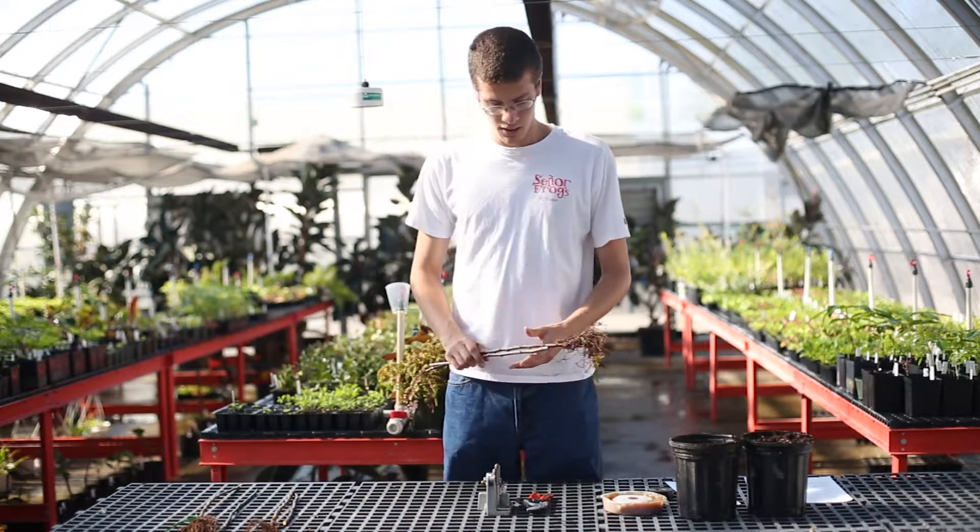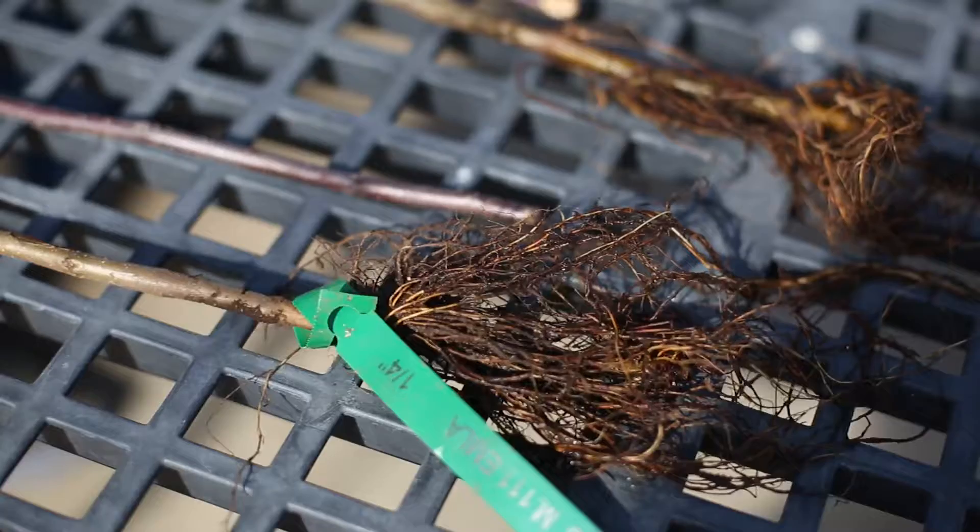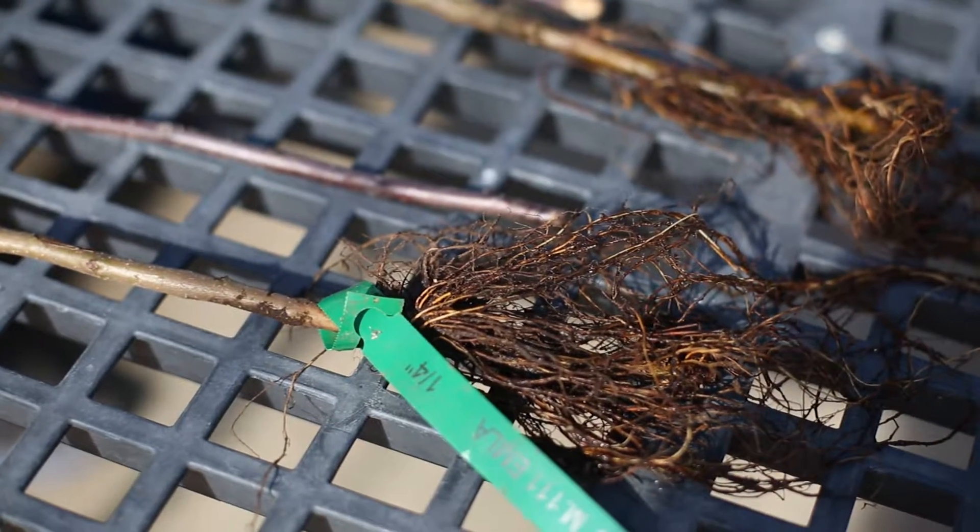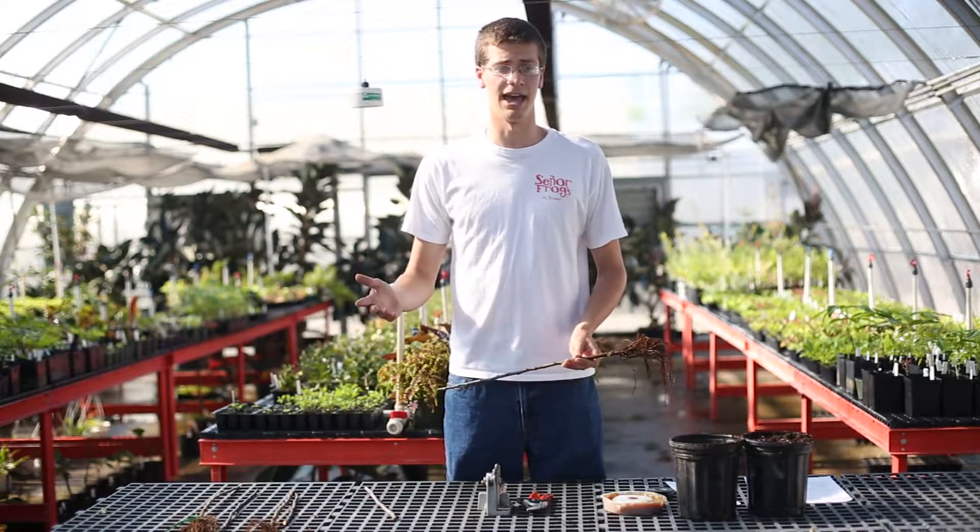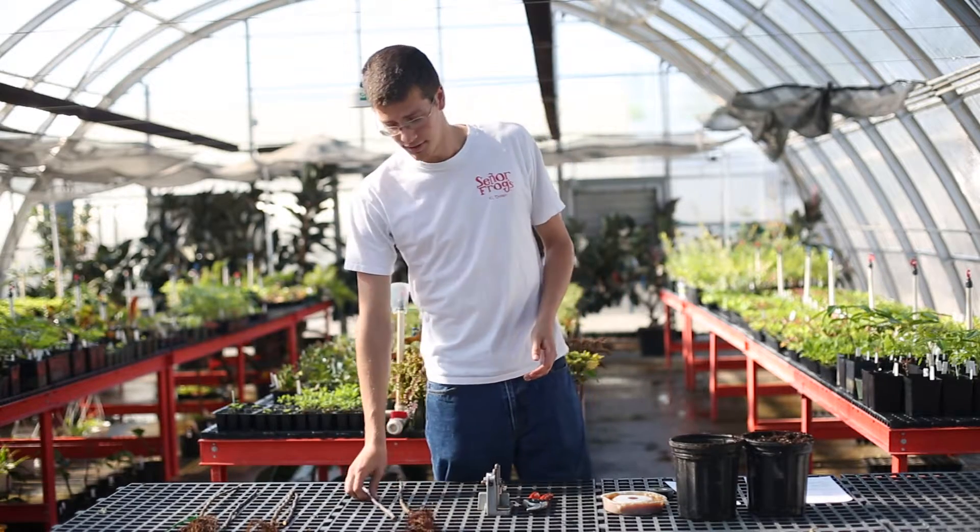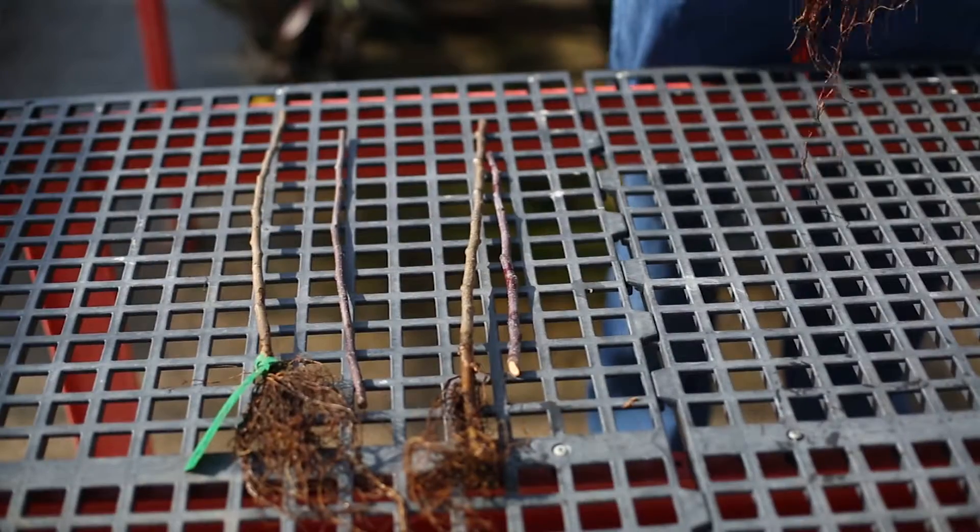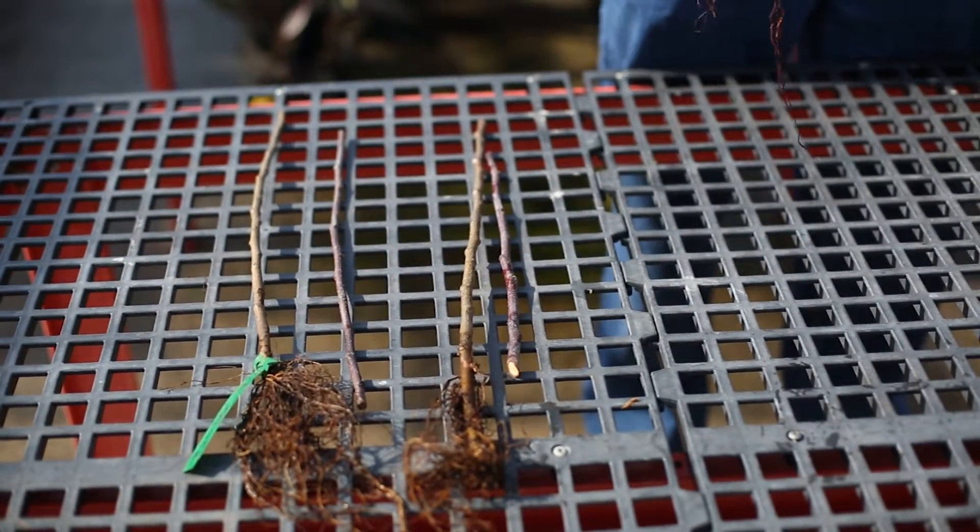Here we have a rootstock and a scion. The rootstock is an M111, a semi-dwarf rootstock. This is going to help control your size so you don't have apple trees that are 60 feet tall and you can't get to the apples. The Empire scion wood, which will go on top, is being selected because the apples are better and it's got better fruit.